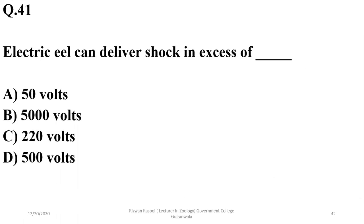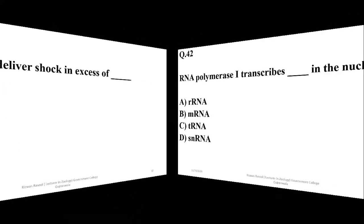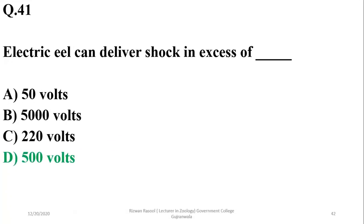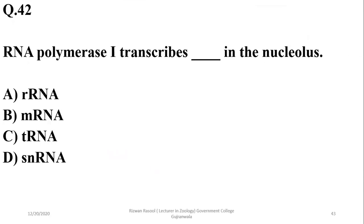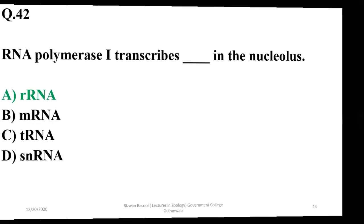Question 41: Electric eels can deliver a shock in excess of 500 to 600 volts, so the right option is D. Question 42: RNA polymerase I transcribes ribosomal RNA; RNA polymerase II transcribes messenger RNA; and RNA polymerase III transcribes transfer RNA. There is also a nucleolus option, so A is the right option.